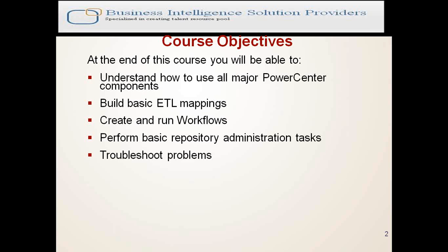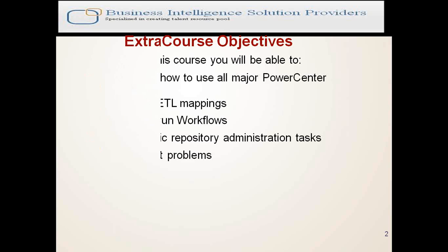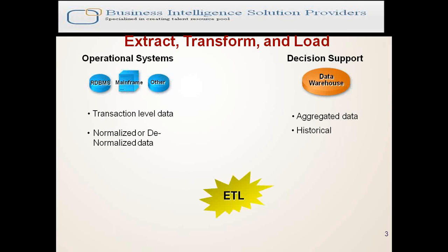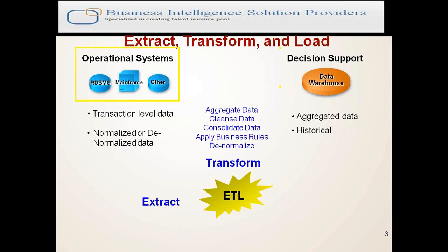Basically, this is a brief introduction of Informatica Power Center. It covers extract, transform, and loading data. We have different types of operational source systems — it might be transactional data, normalized or denormalized. We can take data from mainframes, RDBMS, and SAP. The data warehouse serves as a decision support system that maintains historical data. This is the main structure about ETL — extract, transform, and load.